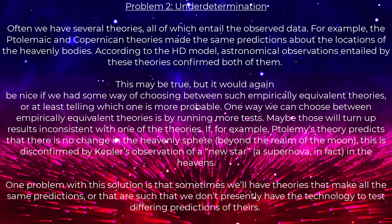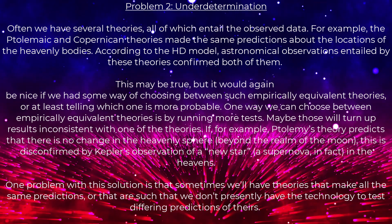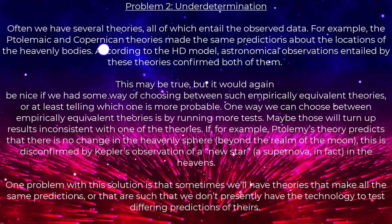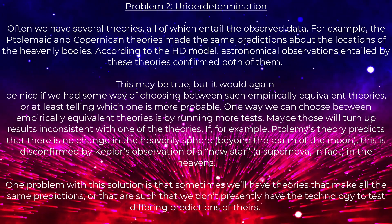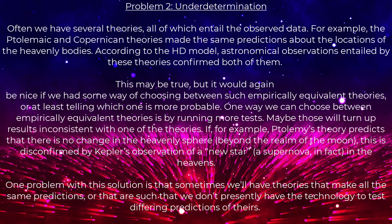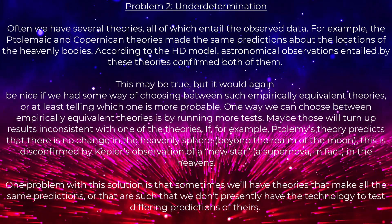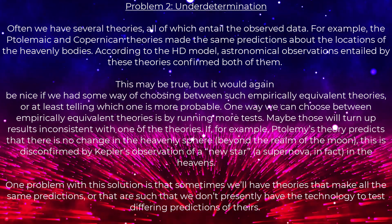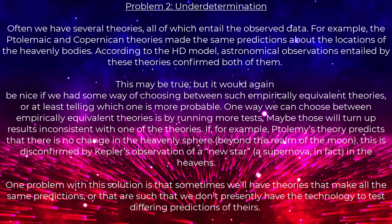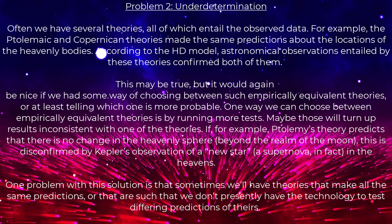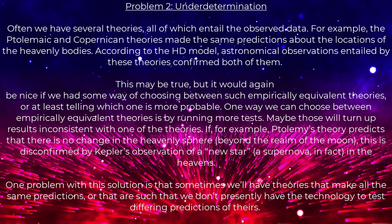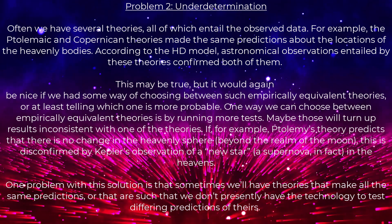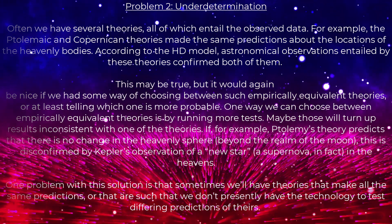Problem two: underdetermination. Often we have several theories all of which entail the observed data. For example, the Ptolemaic and Copernican theories made the same predictions about the locations of the heavenly bodies. According to the HD model, astronomical observations entailed by these theories confirmed both of them. It would be nice if we had some way of choosing between such empirically equivalent theories. One way is by running more tests — maybe those will turn up results inconsistent with one of the theories. For example, if Ptolemy's theory predicts no change in the heavenly sphere beyond the realm of the moon, this is disconfirmed by Kepler's observation of a new star — a supernova — in the heavens.